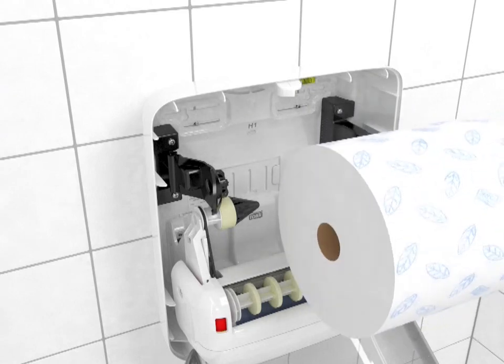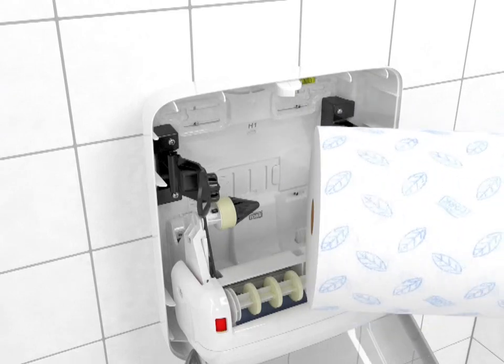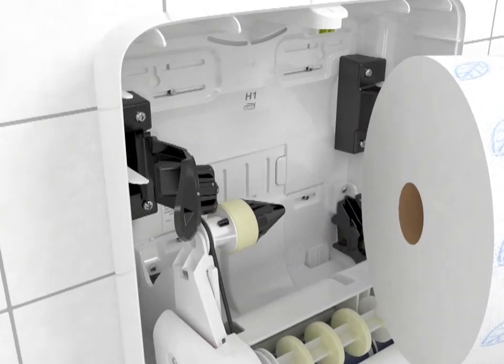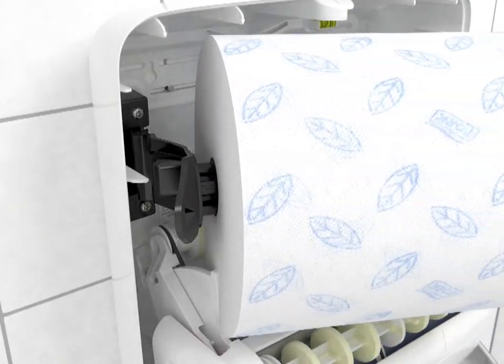The open core is placed on the flexible arm on the left side of the dispenser. To install, simply push the flexible brake back and insert the open core on the arm.